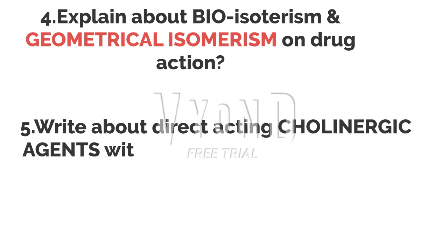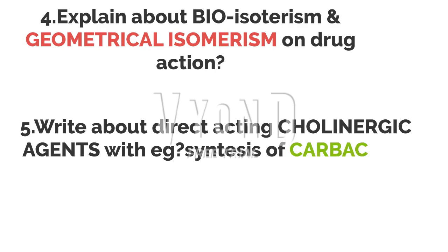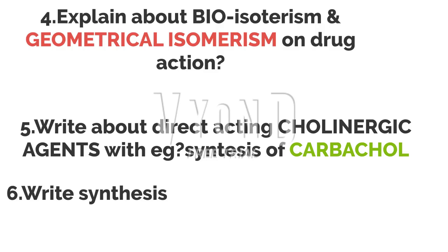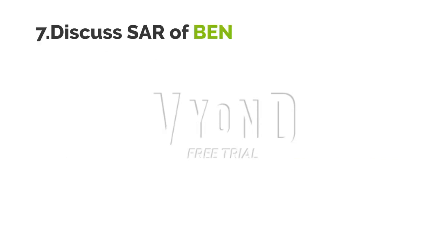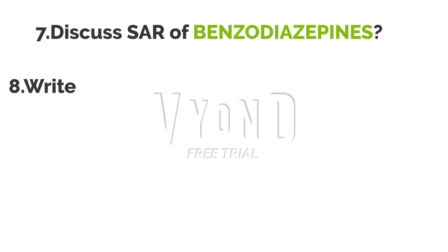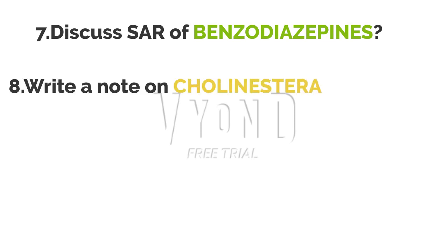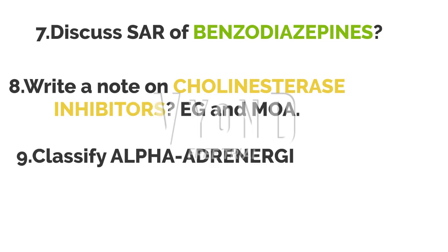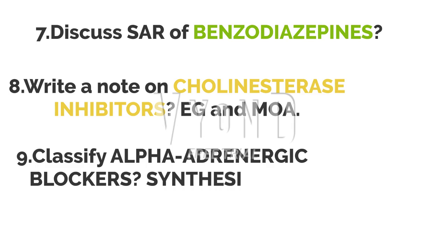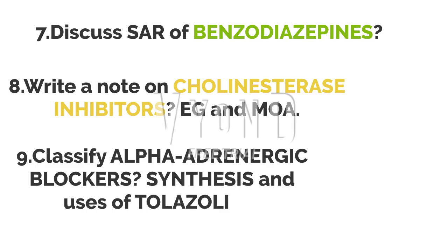Fifth 5-mark question: Write about direct-acting cholinergic agents with examples and synthesis of carbachol. Sixth question: Write the synthesis of dicyclamine hydrochloride and procyclidine with their uses. Seventh question: Discuss the SAR of benzodiazepines — this is asked in both 10-mark and 5-mark formats.